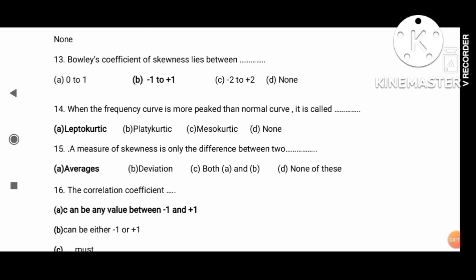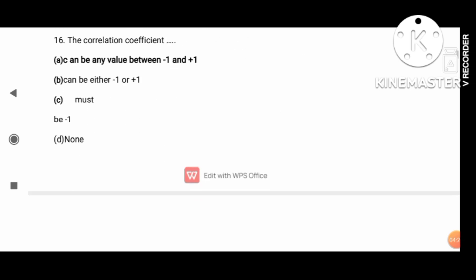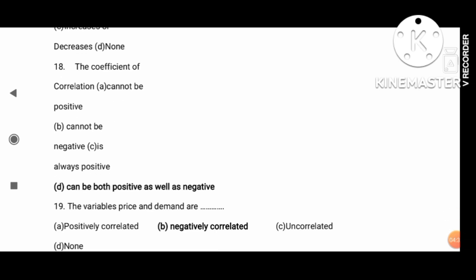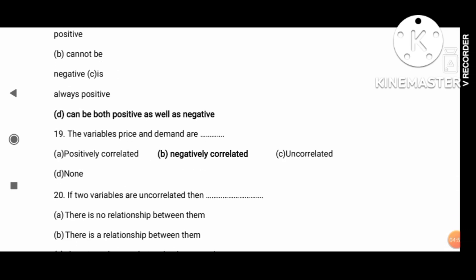The correlation coefficient ranges from minus 1 to plus 1. If gamma xy is greater than 0, then as x increases, y increases. The coefficient of correlation can be both positive as well as negative.